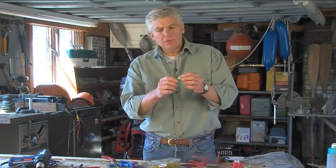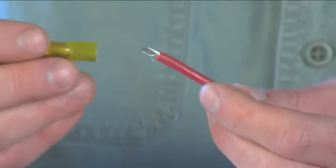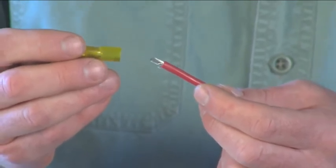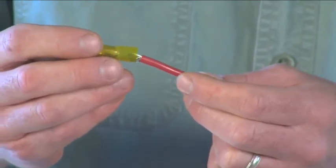Your terminal sleeve should be marine grade and feature adhesive-lined heat shrink tubing to ensure a watertight seal. Now insert the exposed end of the wire into the terminal sleeve until it butts up against the end of the terminal.